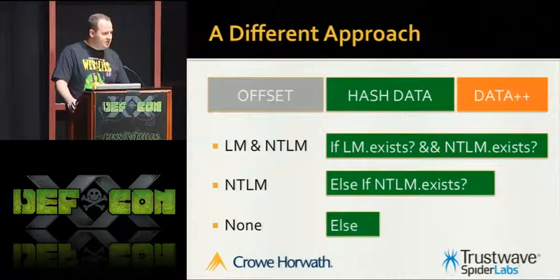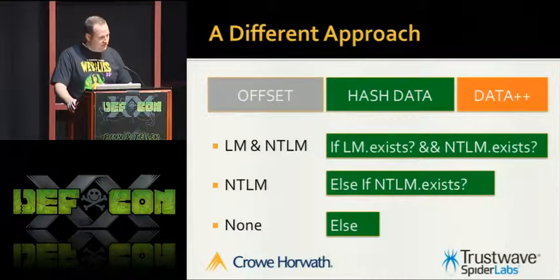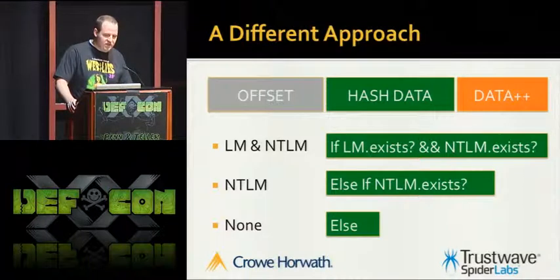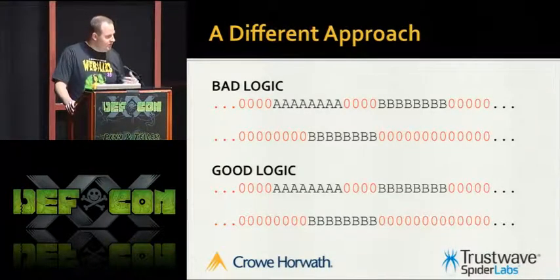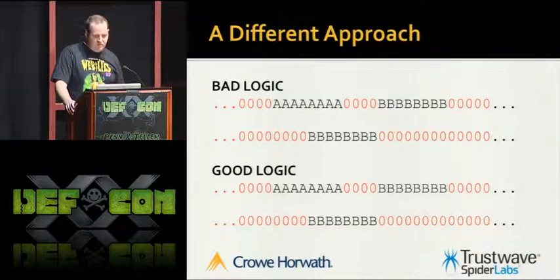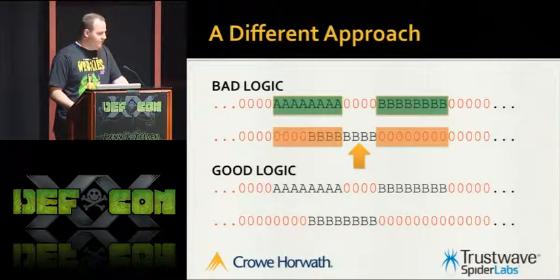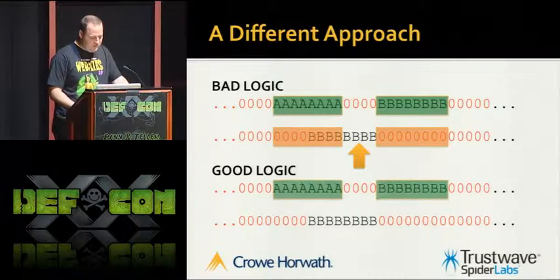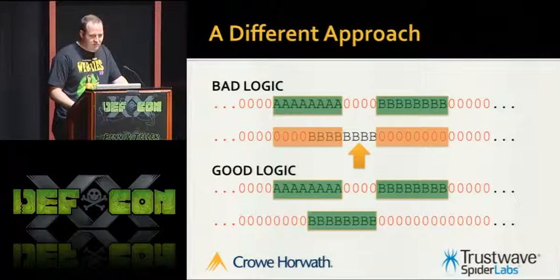Going back to our examples: with the bad measuring-stick logic, we grab garbage data for both LM and NTLM when only NTLM is present. With the corrected header-based logic, we parse the first scenario - LM plus NTLM - correctly, and the second scenario - NTLM only - correctly. We always get the right data, always produce correct LM or NTLM hashes, and if we can't crack them, we can at least pass them successfully via pass-the-hash.